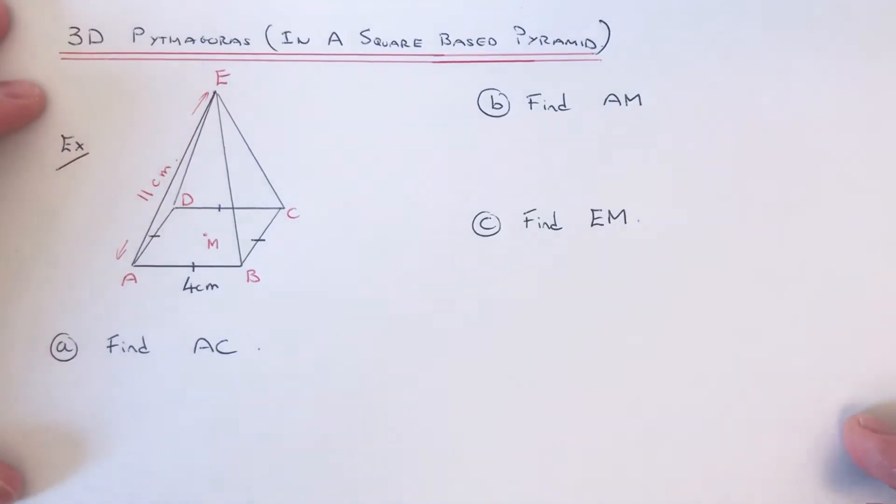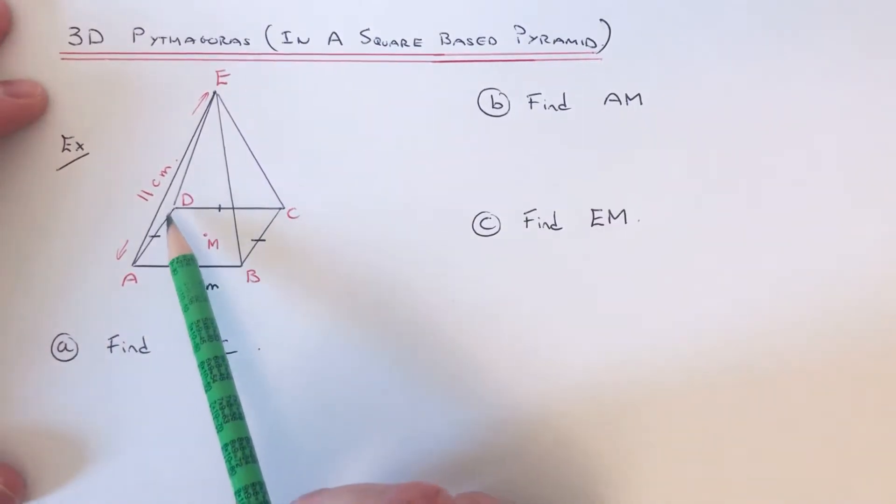Hi guys, welcome back. This is Maths 3000. Today I'm going to show you 3D Pythagoras in a square-based pyramid. Let's have a look at the example. We've got a square-based pyramid with a side length of 4 centimeters around the base and the sloping edge of the pyramid is 11 centimeters.